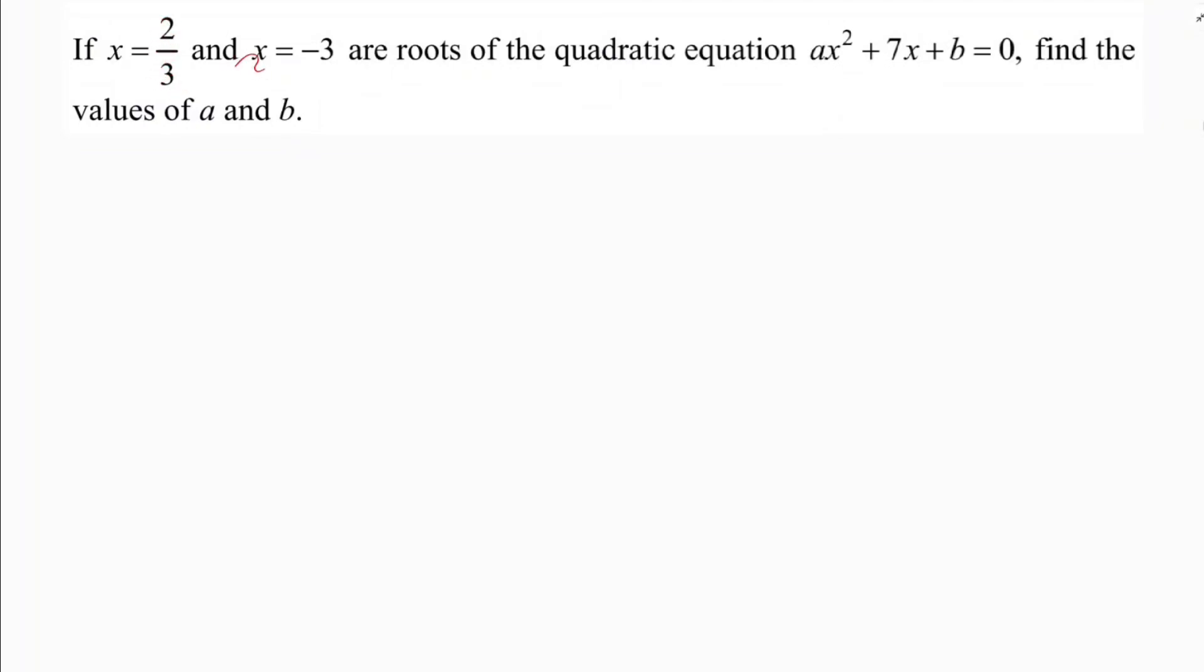If x equals 2 by 3 and x equals minus 3 are roots of the quadratic equation ax square plus 7x plus b equals 0, find the values of a and b.